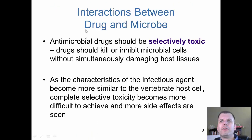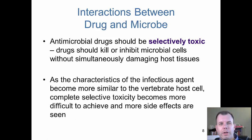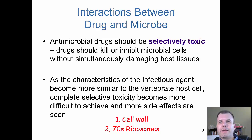When we look at the interactions between the drug and microbe, obviously we want it selectively toxic - kill the pathogen and not kill you. We have to look at the characteristics of the infectious agent compared to the vertebrate host cell and look for differences. If we can find differences, we can target those to kill the microbes and not kill us. The two main differences bacteria have that we don't are the cell wall and the 70S ribosomes - and that's what we're going to be looking at today.